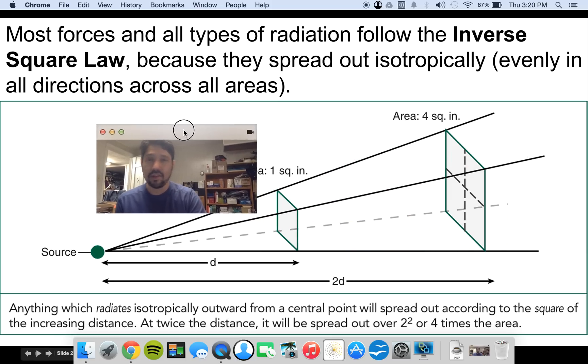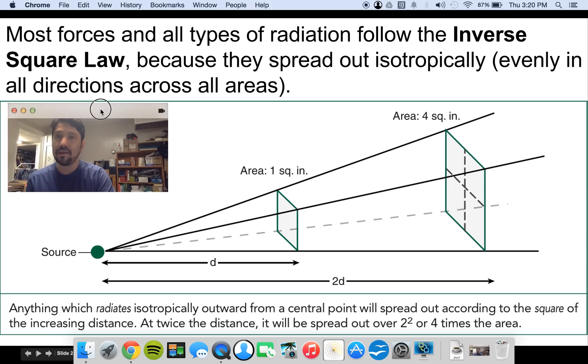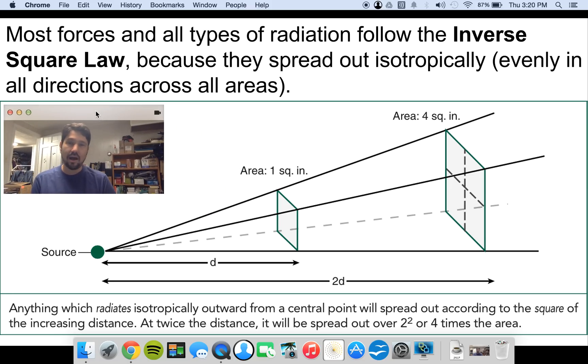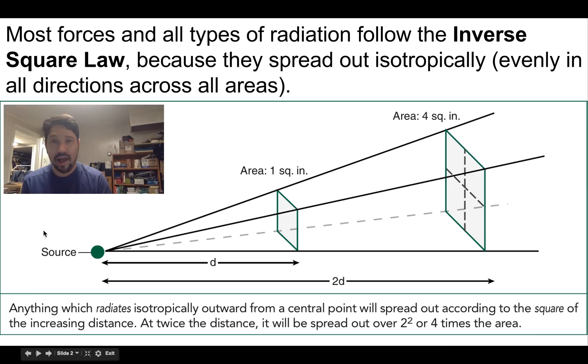So let's give you a little figure here about the inverse square law. And most forces, like gravity or electricity or magnetism, follow this inverse square law because they spread out evenly in all directions across a given area. And when you're spreading out evenly in all directions, we call that isotropically. So here we see a source, and when we're one unit of distance away, that whole X-ray field is over one square inch.